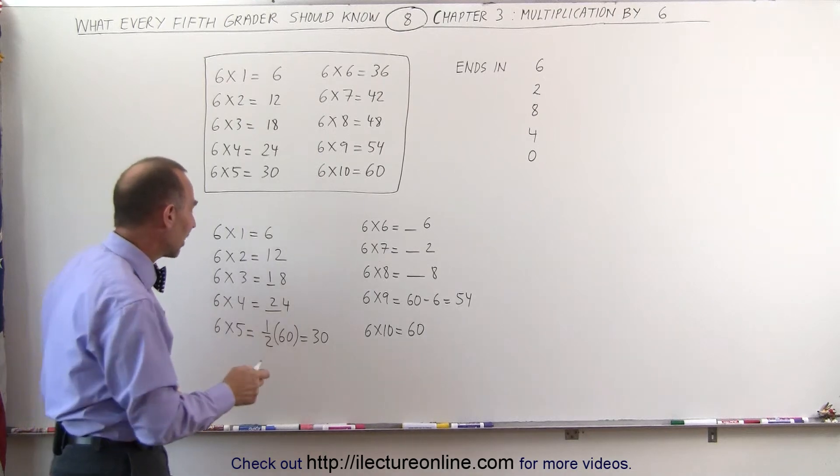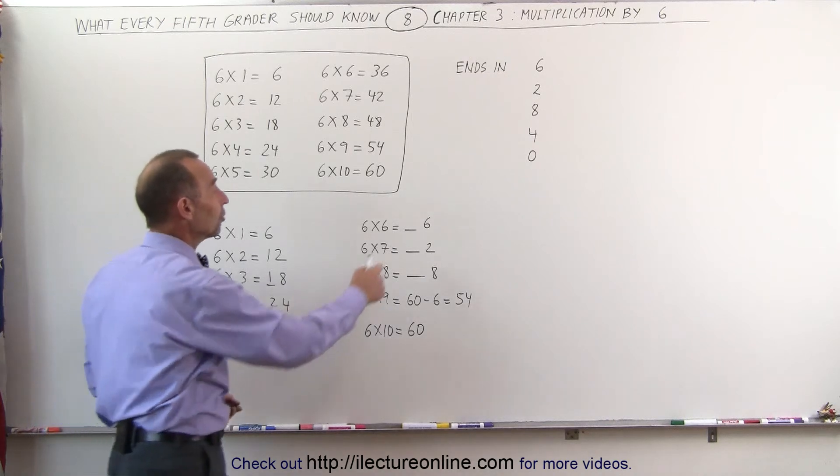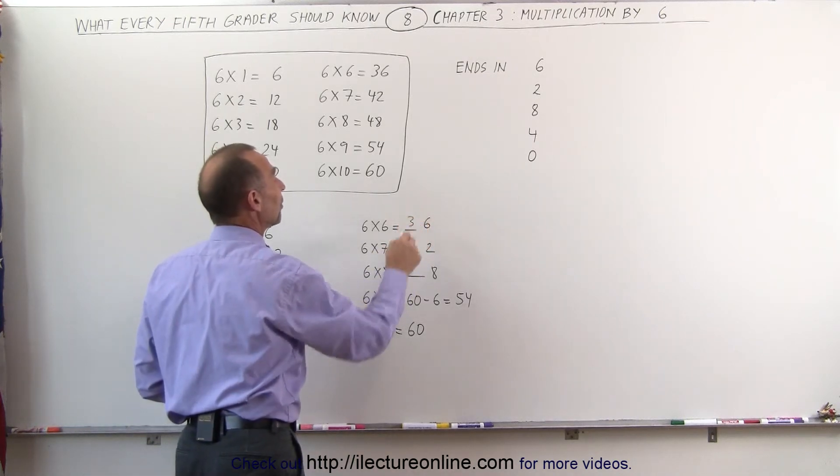And 6 times 6, you take the previous answer, the halfway answer, 30 is half of 60, and you add another 6 to it, because you know that it ends up in a 6.